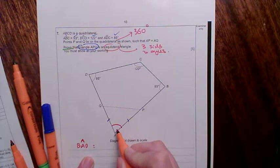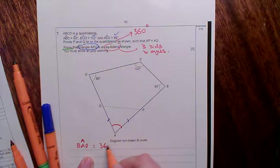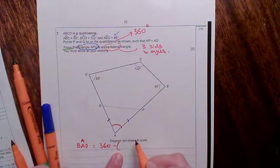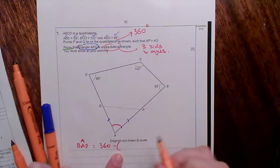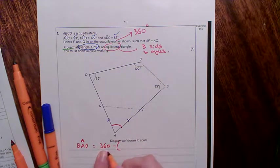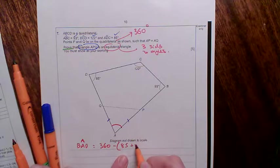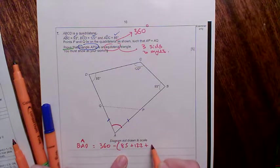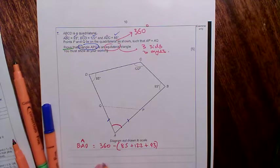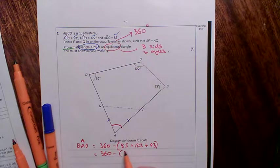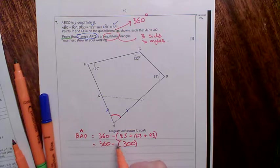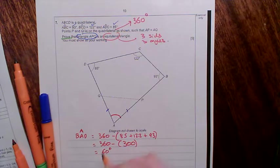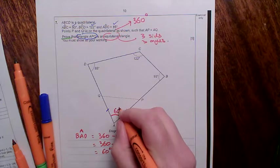Well, it's going to be 360, take away all of the other angles. Take away the 85, take away the 122, take away the 93. So I'm going to show that as 360, take away 85, add 122, add 93. This is a non-calc paper. So that equals 360, take away what they add up to, and they add up to 300. So 360 take away 300 equals 60 degrees. So angle A is 60 degrees.